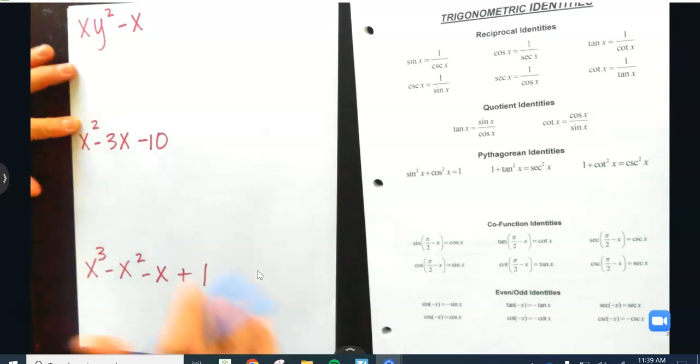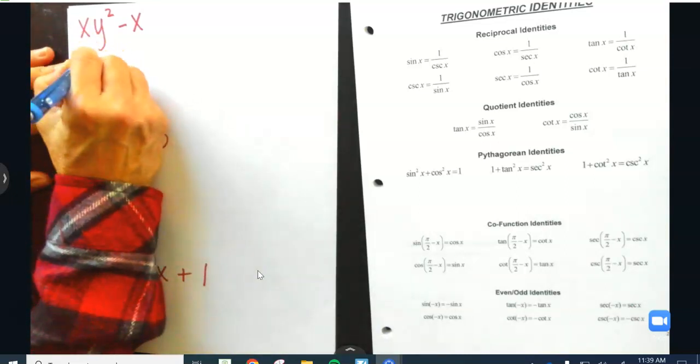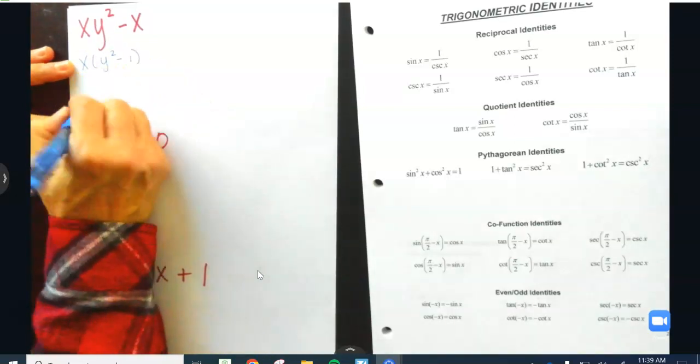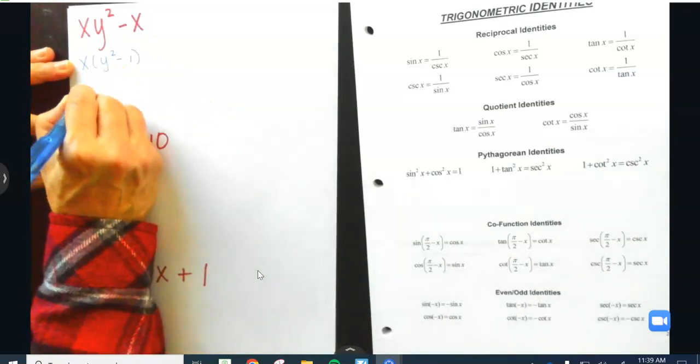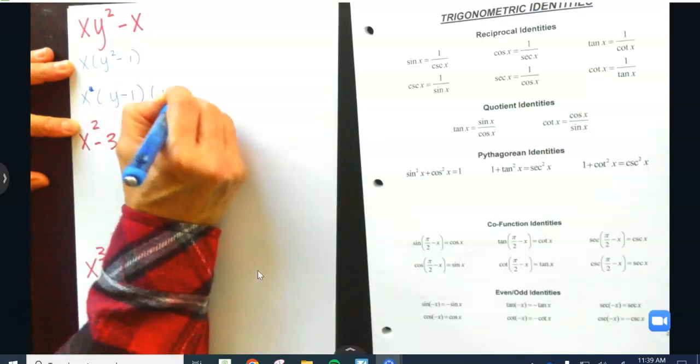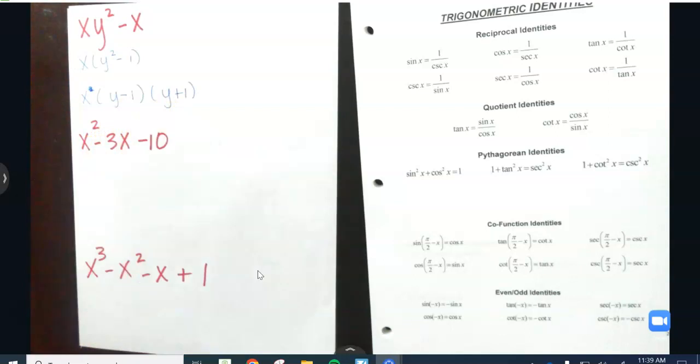All of these are low-level factoring problems. The GCF here is going to be X, this is a difference of two squares. The correct completely factored form of this expression is X(X minus 1)(Y minus 1)(Y plus 1).